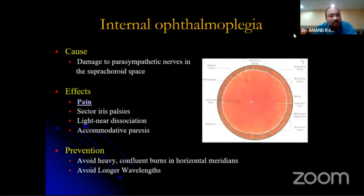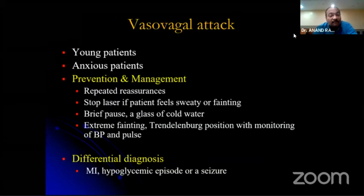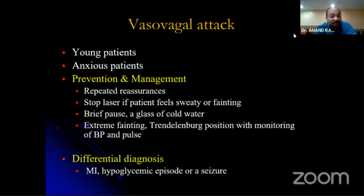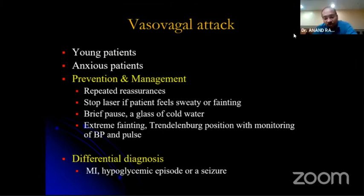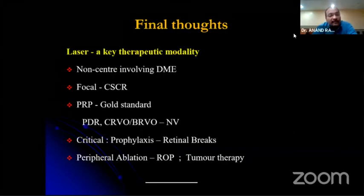Internal ophthalmoplegia can be seen due to damage to parasympathetic nerves in the suprachoroidal space — causing sector iris palsy, light-near dissociation, and accommodative paresis. Avoid heavy confluent burns especially in horizontal meridians and avoid longer wavelengths. Vasovagal attacks can happen, especially in young and anxious patients. Manage by stopping the laser if the patient feels sweaty or faint, doing it in a dark room. A glass of cold water, Trendelenburg position, and monitoring of vitals are recommended, as it can mimic myocardial infarction.